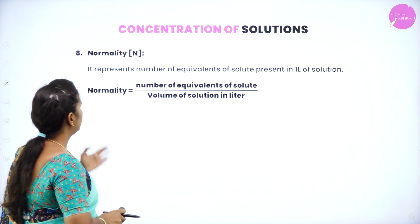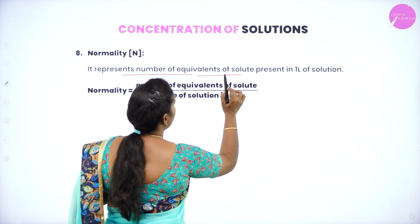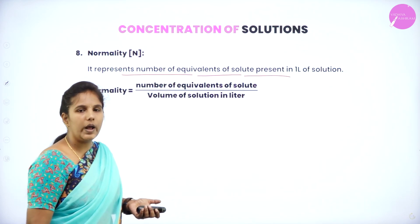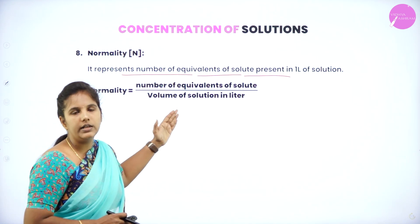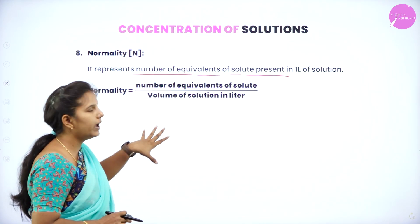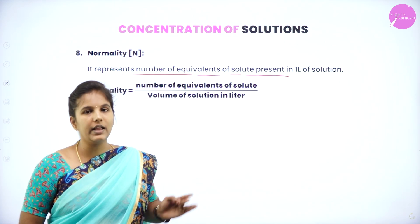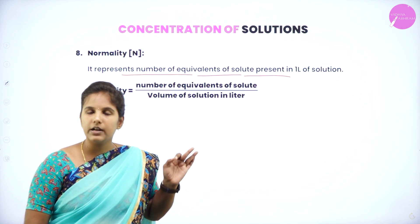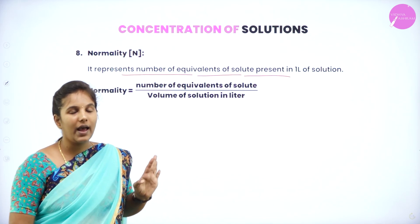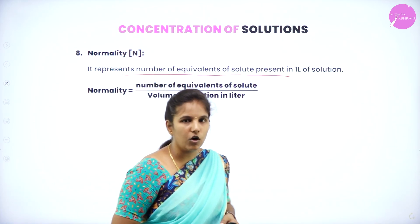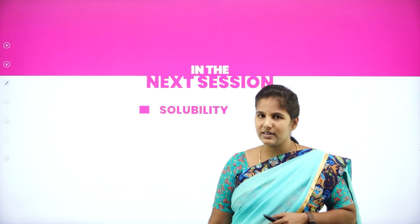Next is normality. Normality represents the number of equivalents of the solute present in one litre of solution, or the number of equivalents of the solute divided by the volume of the solution in litres. Normality, molarity, molality, parts per million, mole fraction, volume percentage, and mass by volume percentage are all methods to express concentrations of solution.